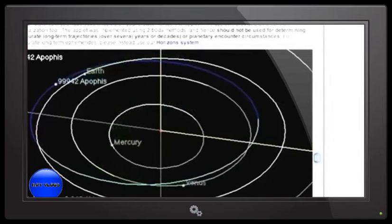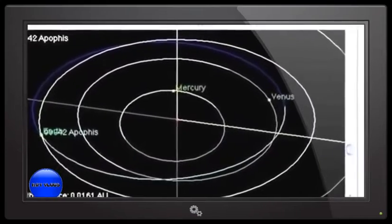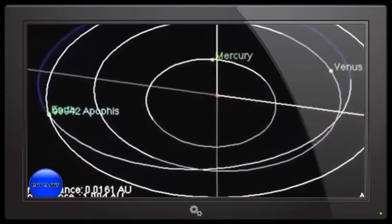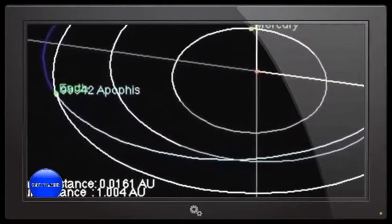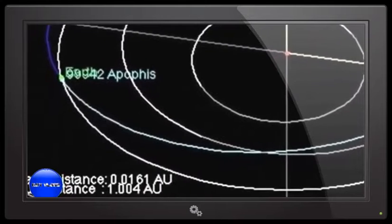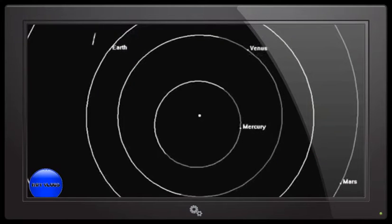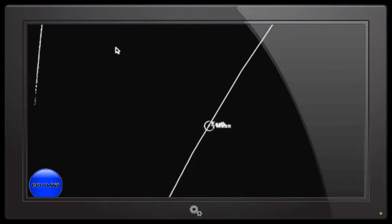While this close encounter with Earth won't be cause for alarm, the story isn't over. The exact path Apophis follows in April 2029 is crucially important, because it will determine whether it hits the Earth when it circles around a second time in 2036. If in April 2029 Apophis passes through a very narrow window known as a keyhole as it passes by the Earth, its orbit will be affected such that when it returns in 2036, it will directly cross that of the Earth and collide with it on Friday, April 13th.